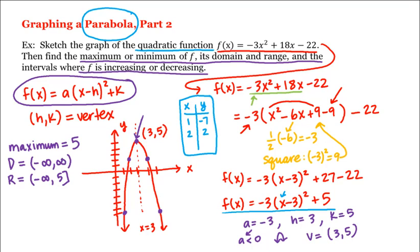To the left of the vertex, the graph is rising, and to the right it's falling. So the function is increasing on the interval (-∞, 3) and decreasing on (3, ∞). Remember that increasing and decreasing are defined on an interval, not point-wise. We could include 3 on either of these intervals and still be correct.